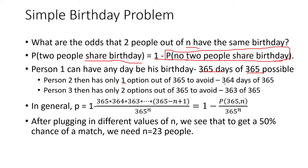So that leaves them with 364 days to choose from. Then person three has two options to avoid, whatever person one has and whatever person two has. So that leaves them with 363. And we can repeat this several times. And we'll notice that we'll get a pattern as seen in the numerator here. We'll have 365 times 364, all the way down to 365 minus n plus 1. That's all going to be divided by 365 to the n power. And that's just from the right hand side here.